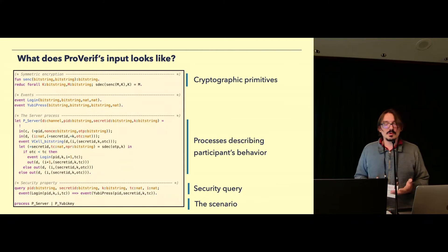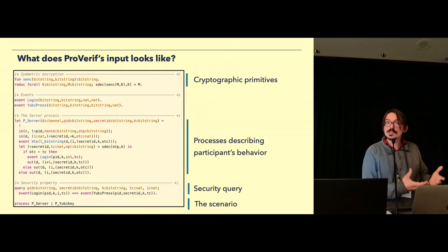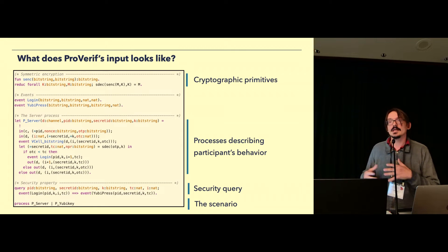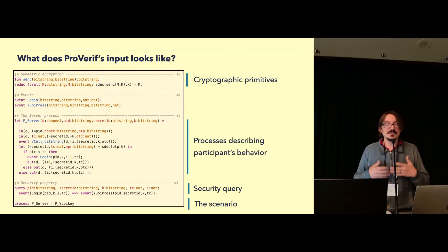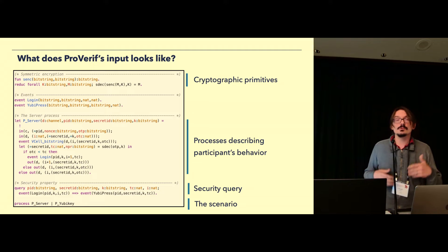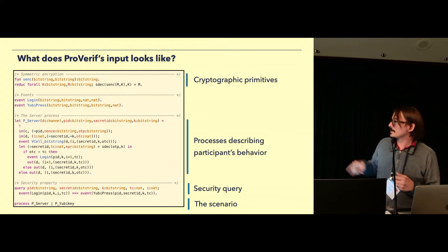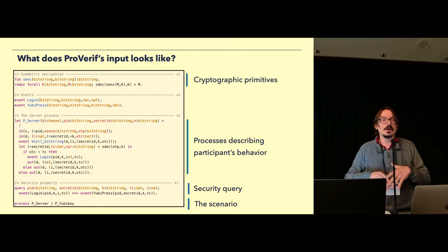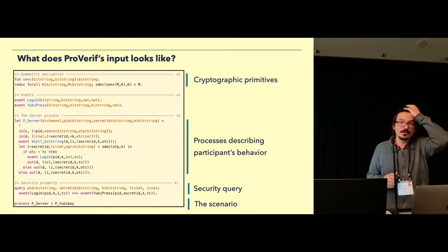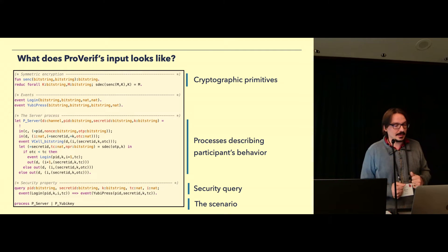So what does ProVerif look like from a user perspective? You start usually by expressing the cryptographic primitives you're going to use in your protocol and the algebraic properties using either equational theory or rewriting systems. And you express the behavior of the participants of your protocol through a process algebra that comes from the applied pi calculus, which is an extension of the pi calculus for crypto. Then you can express your security query. Here it's a correspondence query at the bottom, and also the scenario in which you want everything to be verified. It can handle an unbounded number of sessions, hence usually the undecidability.